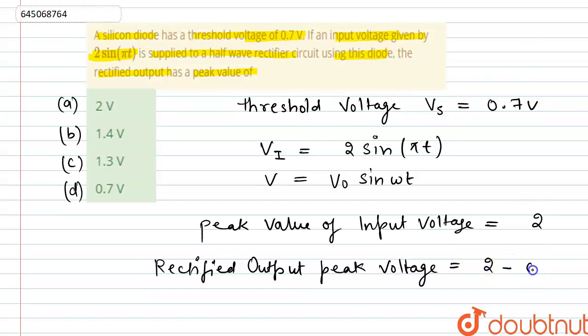So we can write this as 2 minus 0.7 volt. From this we get rectified output peak voltage is 1.3 volt. And from the options we can see that option C is the correct option. Thank you.